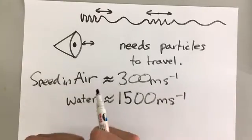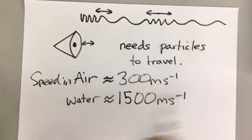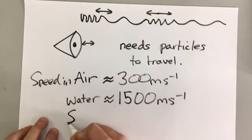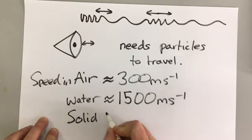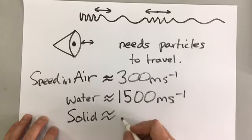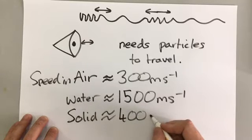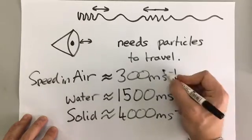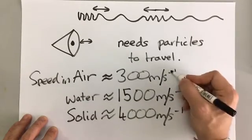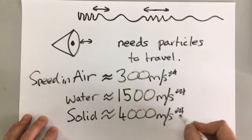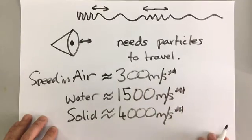The particles are closer together so it's easier for them to pass their vibrations and so sound travels faster. And as you would expect, in a solid the speed of sound varies depending on the density of the solid, but it's approximately somewhere between 3000 and 5000 metres per second. We usually write metres per second like this, but it means the same thing if you do ms to the minus one.